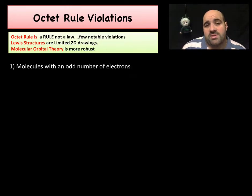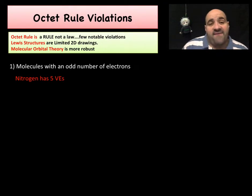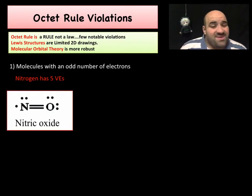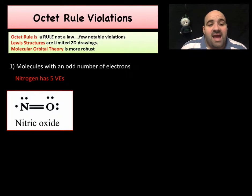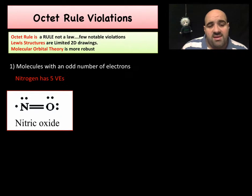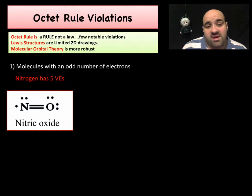The first of the three cases that can violate the octet rule are molecules with an odd number of electrons. Recall that nitrogen has five valence electrons. If we have nitric oxide, there's no way possible to get an octet because there's an odd number — you just can't get it. Oxygen has six valence electrons, nitrogen has five, that's 11 total. You cannot get an octet around both of them with an odd number of valence electrons. This is an actual molecule that exists, but it violates the octet rule because nitrogen only has five — an odd number.